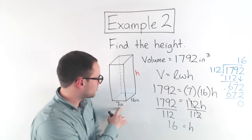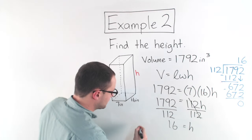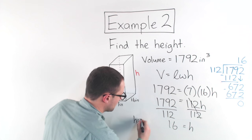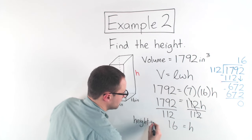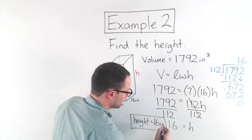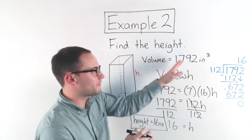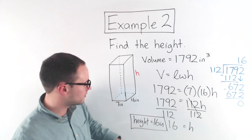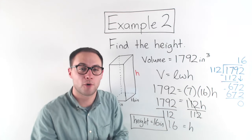Now I've got to remember my units. These were all inches. So final answer, the height is equal to 16 inches. Not inches cubed. Remember, that was for the volume. This is just height. So 16 inches. Here's some more to try on your own.